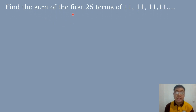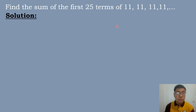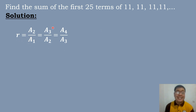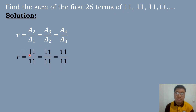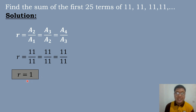Let's have our first example. Find the sum of the first 25 terms of 11, 11, 11, 11. The first thing to do is compute for the common ratio using the formula R equals A sub 2 over A sub 1, A sub 3 over A sub 2, and A sub 4 over A sub 3. Substituting: 11 divided by 11 equals 1. So the value of the common ratio is equal to 1.